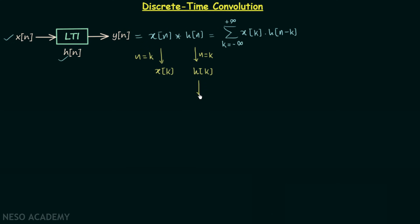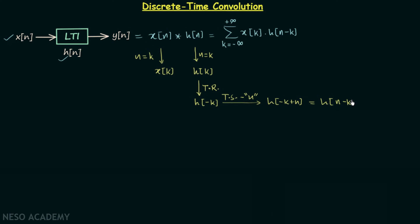We perform a time reversal operation on signal h[k]. After time reversal, we get a new signal h[-k]. Then we perform a time shifting operation by n, giving us h[-k+n], which equals h[n-k]. So we have x[k] multiplied by h[n-k], obtained after performing time reversal and time shifting operations on h[k].